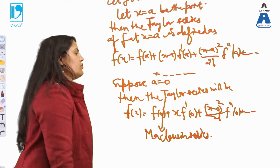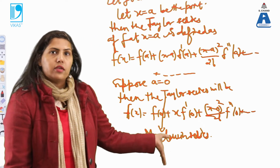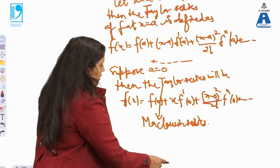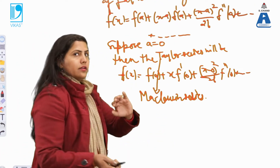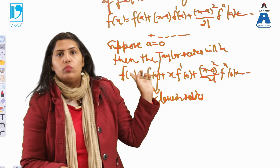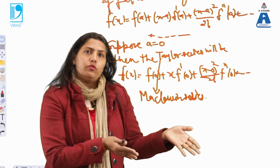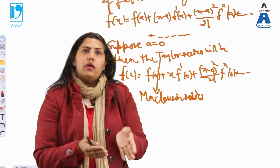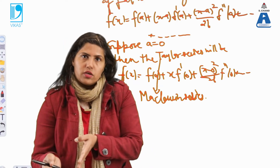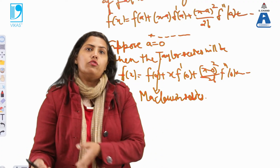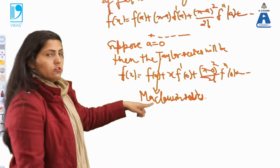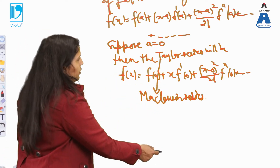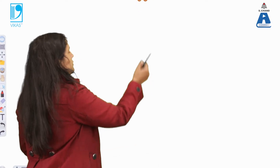We have done convergence and divergence of series before. Here also we'll discuss it, but I'll connect the continuity of the function with the convergence of the series, because I am connecting a function in terms of a series. So the function's continuity will answer the convergence of the series. This is the Taylor series form.